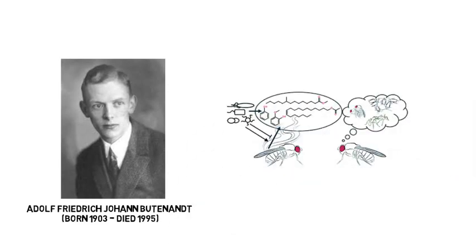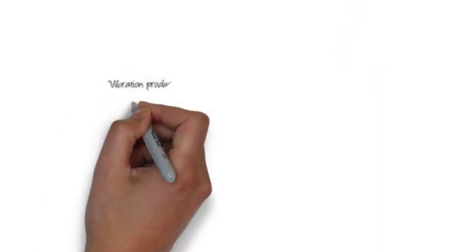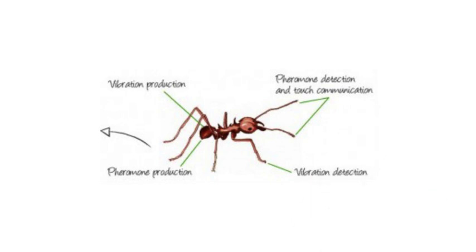Pheromone is a chemical substance produced and released into the environment by mammals and insects. The ant is one of the animals that communicate through pheromone.